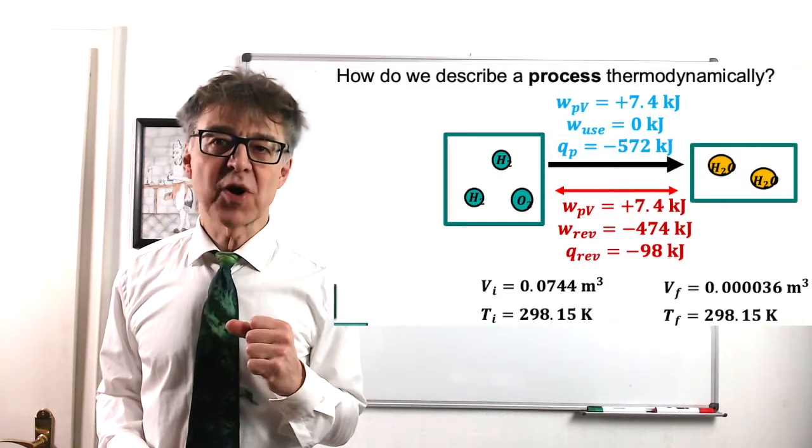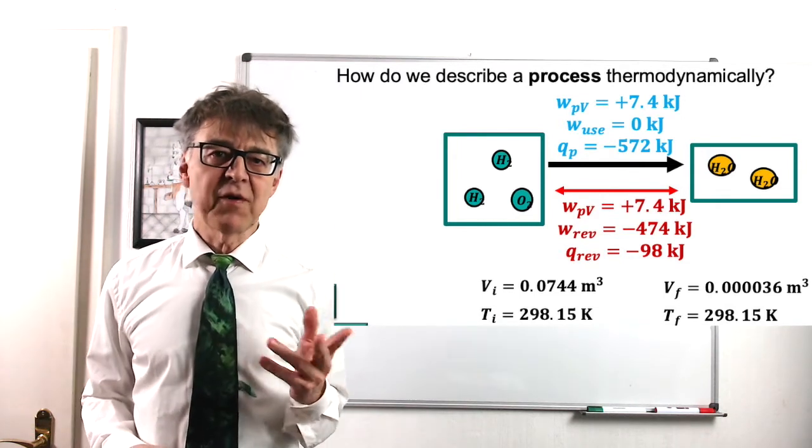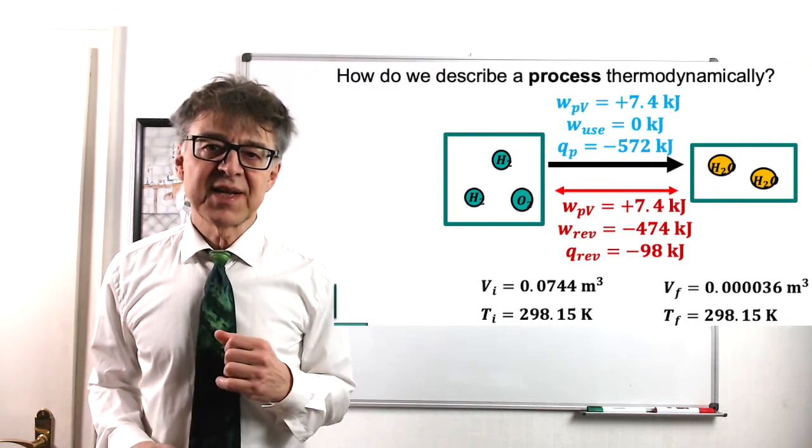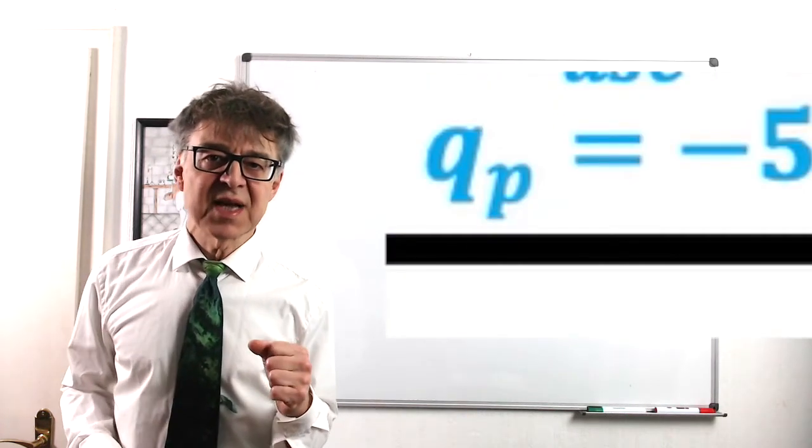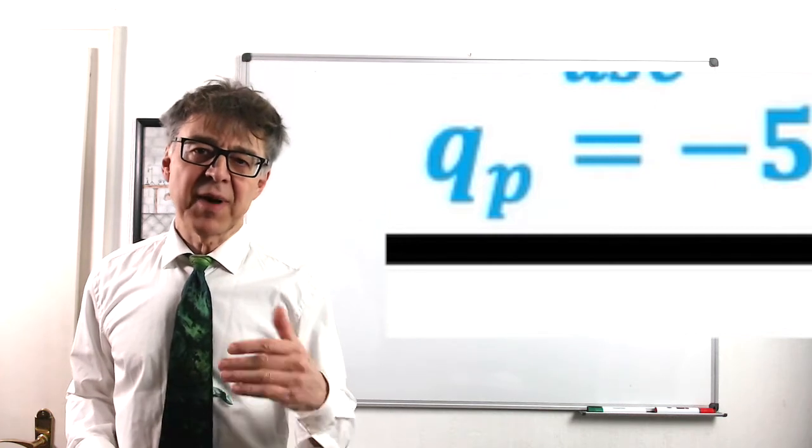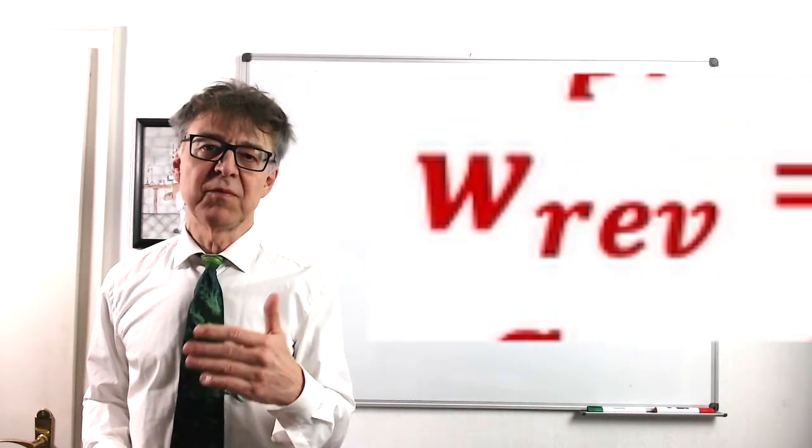So when dealing with path functions, work and heat, you always have to specify the path of the process, often as an index to the letters W and Q. For example, Q sub P stands for isobaric path or W sub ref stands for reversible path.